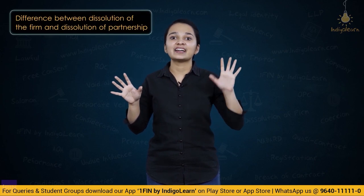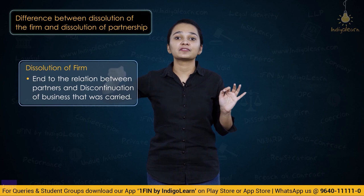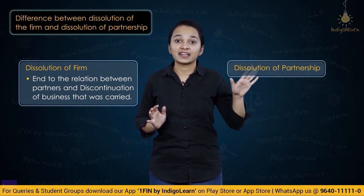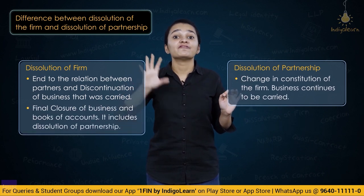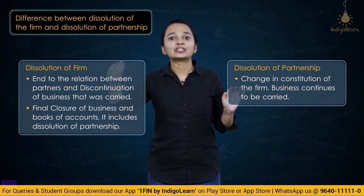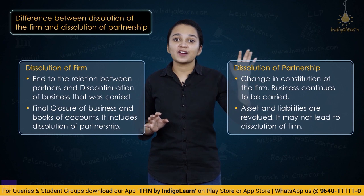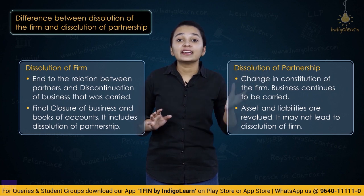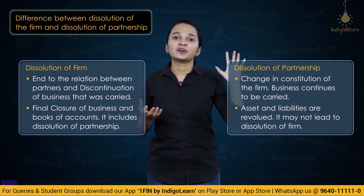We also understood the difference between dissolution of a firm and dissolution of partnership. Dissolution of a firm means complete discontinuation of the partnership business — the partnership totally comes to an end, final closure of accounts happens, and it includes dissolution of partnership. Dissolution of partnership, on the other hand, is only a reconstitution of the firm — there is no final closure of accounts, only revaluation of assets and liabilities. It may not lead to dissolution of the firm.